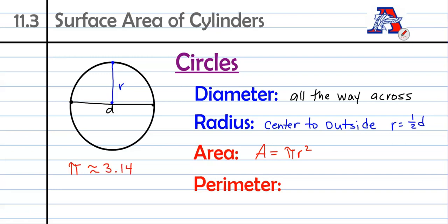Now, I would prefer that you just use the pi button on your calculator so that you don't end up rounding. But if you have an old-fashioned calculator that doesn't have the pi button on it, you could use 3.14. You're not going to get as perfect of an answer.